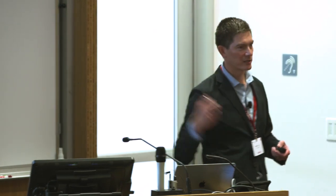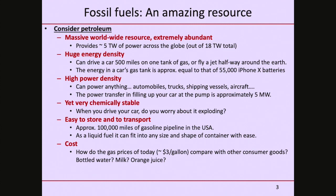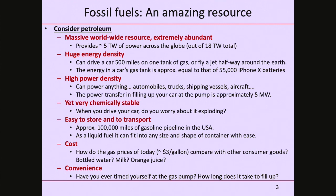Despite all this, petroleum is very chemically stable — we don't worry when we hop into a car. It's easy to store and transport; there are about 100,000 miles of gasoline pipeline in the U.S. And how much do we pay? Right now the U.S. average is about $2.60 a gallon; here in California it's a little north of three. What else can you buy for $3 a gallon? A bottle of water? A gallon of orange juice can cost you four bucks.